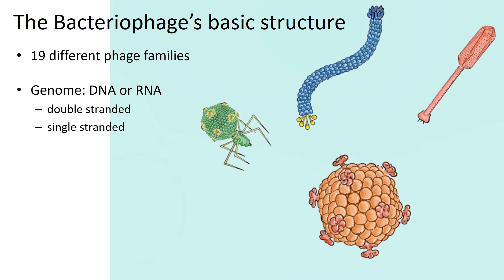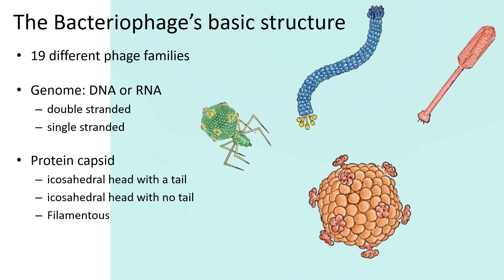In fact, only two of the 19 families have RNA genomes. The genomes are either double-stranded or single-stranded. Their capsids consist of icosahedral heads with or without tails, or they are filamentous. Five families are known to have members with envelopes surrounding their nucleocapsids. So like other viruses, bacteriophage are very diverse in their morphology.